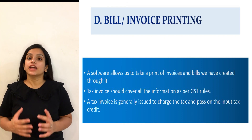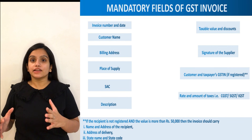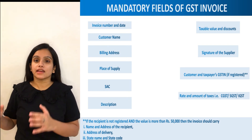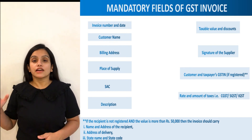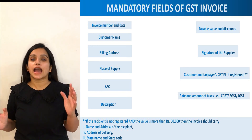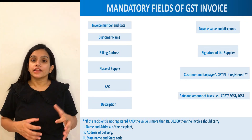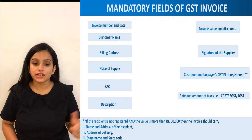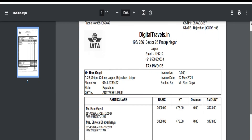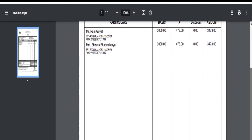D — Print of Invoice and Bill. A software should allow you to print the invoice or bill created through the software. The invoice should cover all information required under GST. Mandatory fields include: invoice number and date, customer's name and billing address, customer and taxpayer's GST number if registered, place of supply, service accounting code, taxable value and discounts, rate and amount of tax — CGST, SGST, IGST — and signature of the supplier. If the recipient is not registered and the value exceeds ₹50,000, the invoice should also include the recipient's name, address, delivery address, state code, and state name. Here is the printed invoice generated for Mr. Ram with all mandatory details.